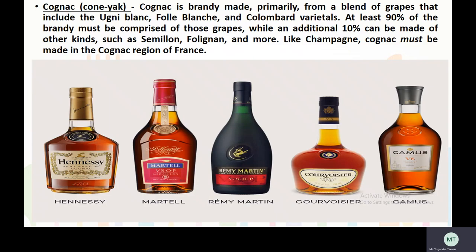The next terminology is cognac, pronounced as cognac. Cognac is a brandy made primarily from a blend of grapes that include Ugni Blanc, Folle Blanche, and Colombard varietals. At least 90% of the brandy must be comprised of those grapes.